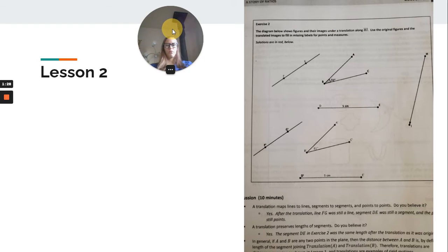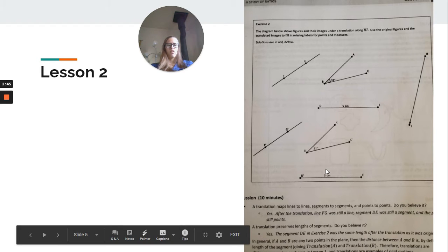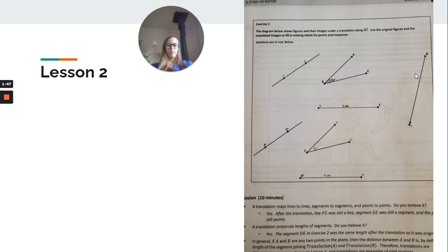And then in Lesson 2, we looked at this one here. So, everything is getting translated along HI right here. So, we have this first segment gets moved down here. We have this angle that gets moved down here. And this line that gets moved down here. So, everything along this one here. Okay?